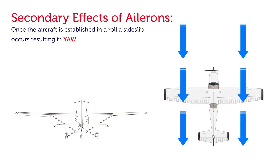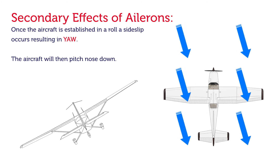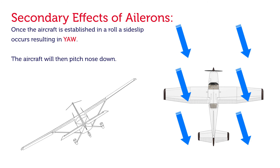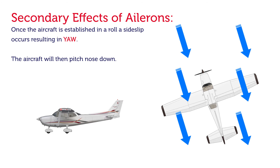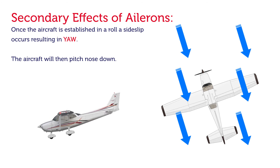The secondary effect of ailerons is yaw. The primary effect of aileron is roll, but once the aircraft is established in a roll a side slip occurs, resulting in yaw, and the aircraft will then pitch down. The aircraft always wants to align itself with the relative airflow through the dorsal fin. As we roll, our direction changes and the relative airflow hits the rearward section of the empennage, causing the aircraft to yaw into the relative airflow. As it yaws, the nose pitches down, and the aircraft continues to roll more, yaw more, and pitch the nose down further.